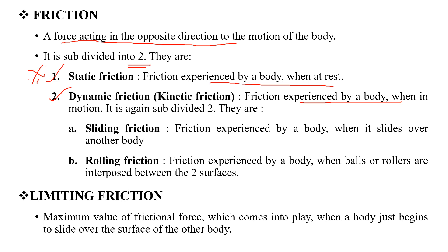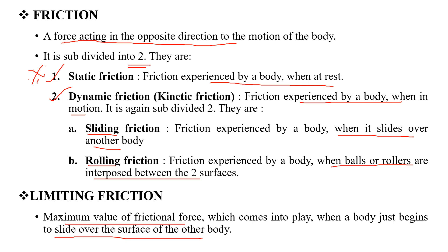Dynamic friction is further subdivided. The first type is sliding friction. Limiting friction is the maximum value of friction force experienced by a body just before it begins to move.